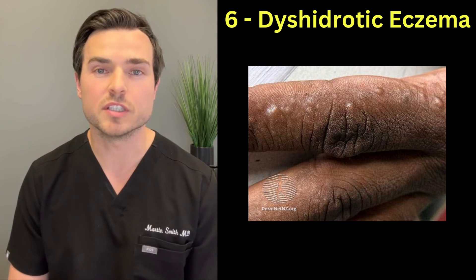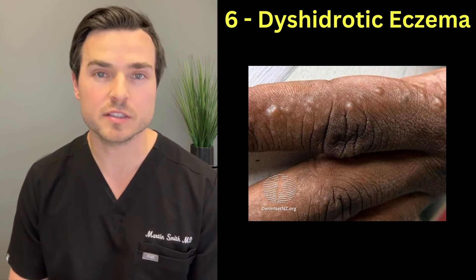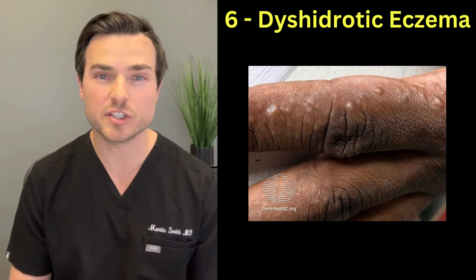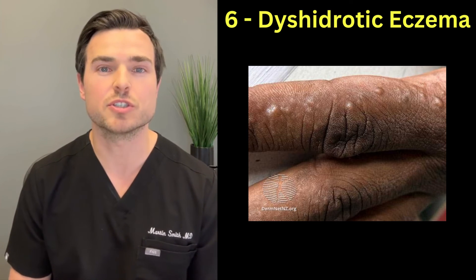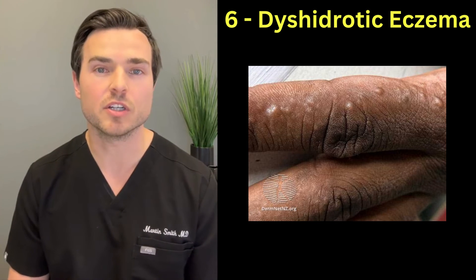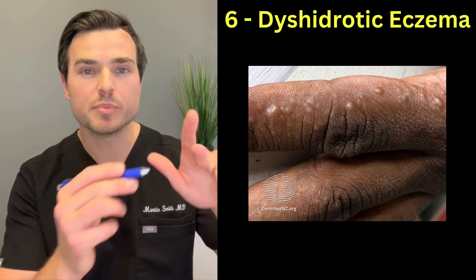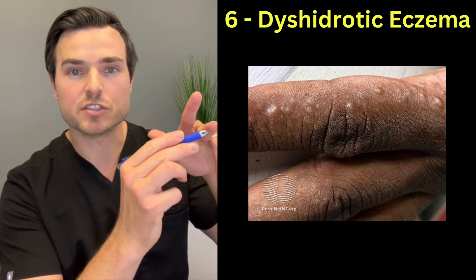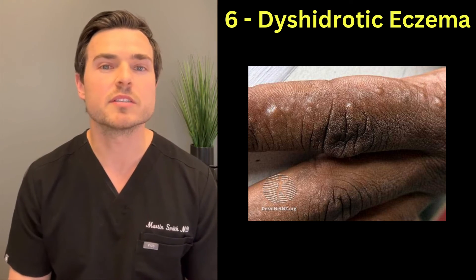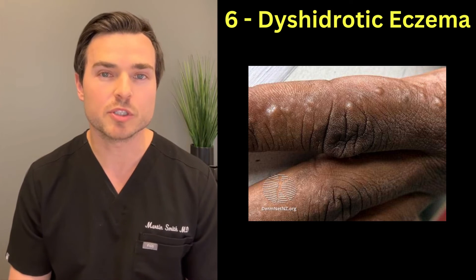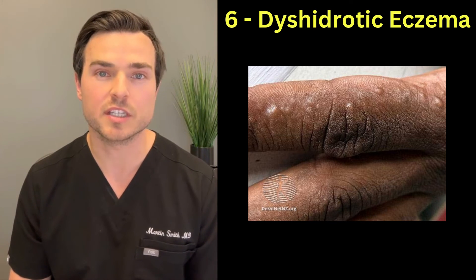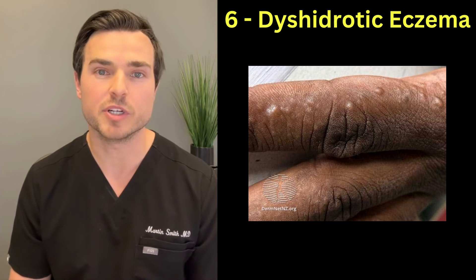The next type is dyshidrotic eczema, also called palmoplantar eczema. It's a very itchy rash that shows up as small blisters, most commonly found in young adults. It appears between the fingers, on the palms, and on the soles of the feet. Treatment is similar to atopic dermatitis, and the biologic medication Dupixent has been shown to be quite effective.